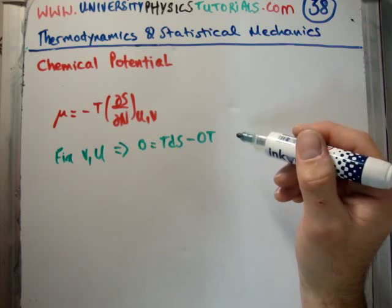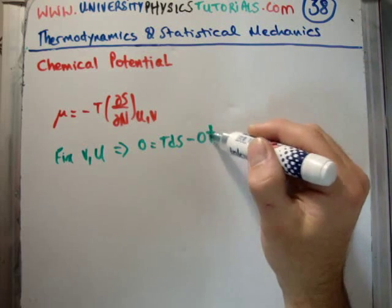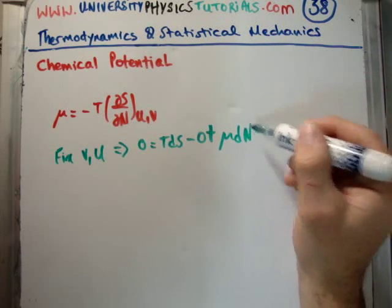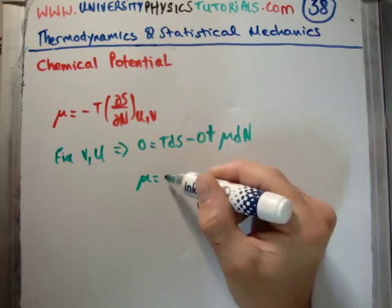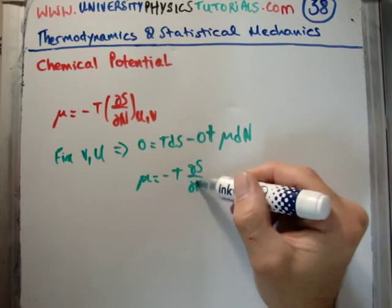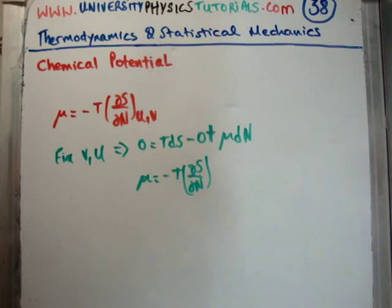Well, if we fix the volume and I fix the internal energy, then the thermodynamic identity becomes 0 is equal to TdS plus μdN. Or that μ is equal to minus T times ∂S/∂N. This is exactly what we thought a moment ago.